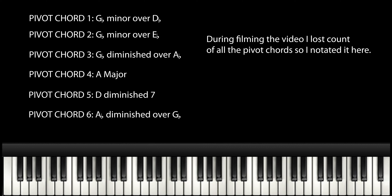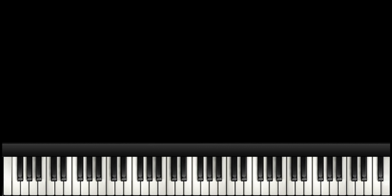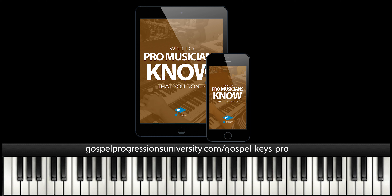We also did the minor thirds — the minor thirds and major, the melodic minor for G-flat. You can do that same thing and just keep it in D-flat. I hope that's helped you. Check out GospelProgressionsUniversity.com forward slash Gospel Keys Pro — you can download my free guide called 'What Do Pro Musicians Know That You Don't?' God bless you and I will see you in the next video.